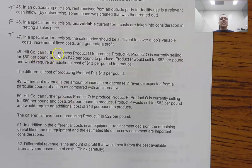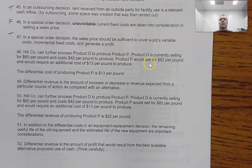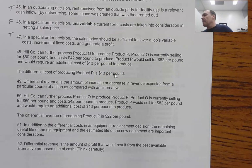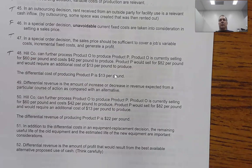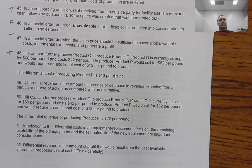Question 48: 'Hill Company can further process Product O to produce Product P. Product O is currently selling for $60 per pound and costs $42 per pound to produce. Product P would sell for $82 per pound and would require an additional cost of $13 per pound to produce. The differential cost of producing Product P is $13 per pound.' This is a true statement. We have to be careful because you could be asked for differential costs, differential revenue, differential profit, or even differential contribution margin.